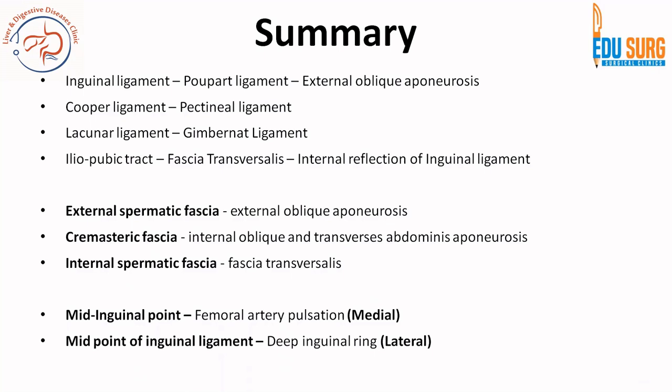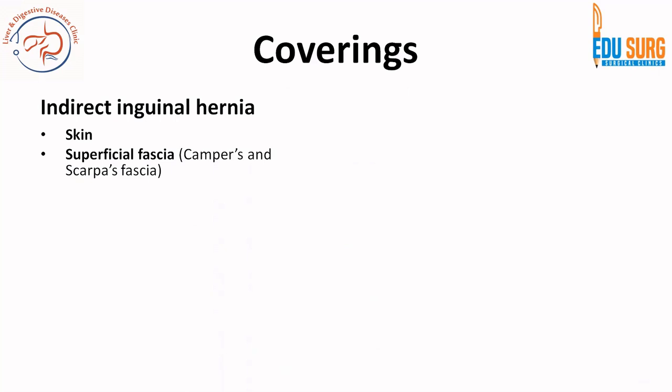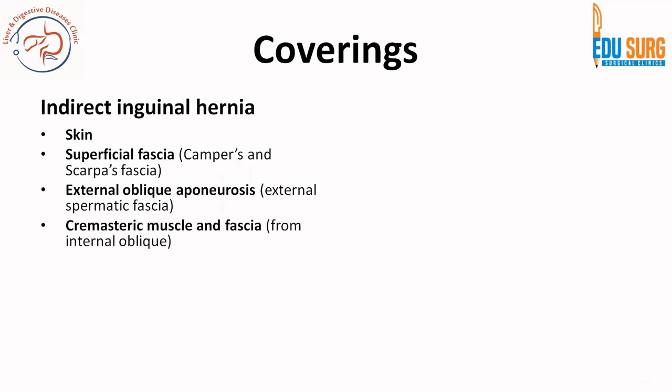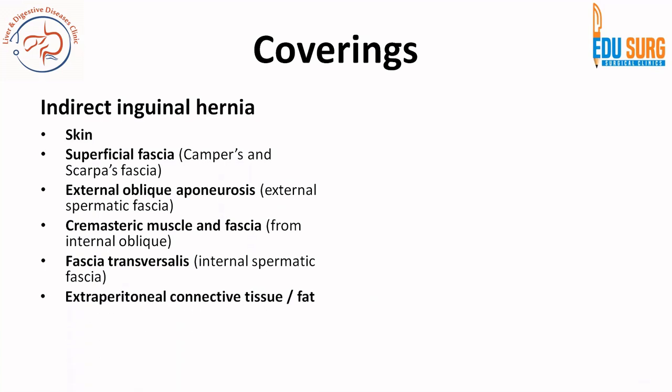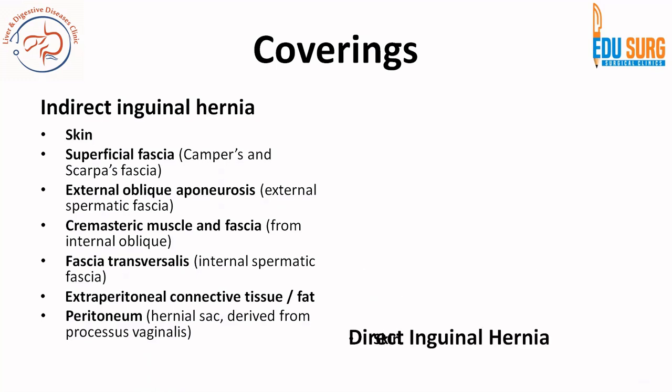Coverings of hernias are commonly asked. We already have a video on the abdominal wall when we discussed ventral hernia, which also covers the various layers where mesh is placed. In indirect hernia from outside to inside: skin, superficial fascia, external oblique aponeurosis giving the external spermatic fascia, cremaster muscle from internal oblique, and fascia transversalis forming the internal spermatic fascia. After this is the extraperitoneal connective tissue and fat, and then the peritoneum from which the hernial sac is derived through the processus vaginalis.